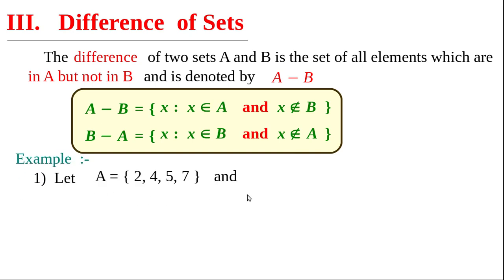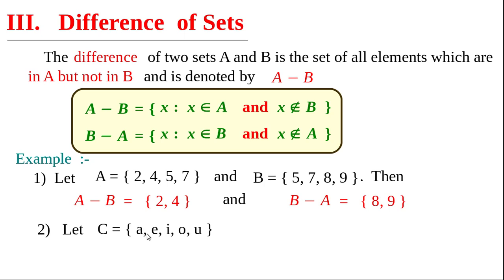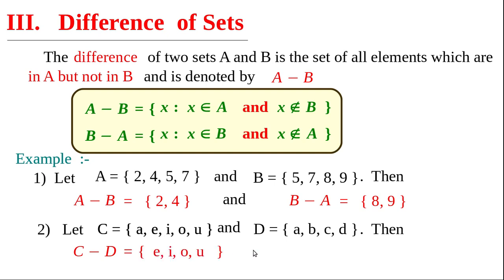Now write some examples. First example: A = {2, 4, 5, 7} and B = {5, 7, 8, 9}, then A minus B = {2, 4} and B minus A = {8, 9}. Second example: C = {a, e, i, o, u} and D = {a, b, c, d}, then C minus D = {e, i, o, u} and D minus C = {b, c, d}.